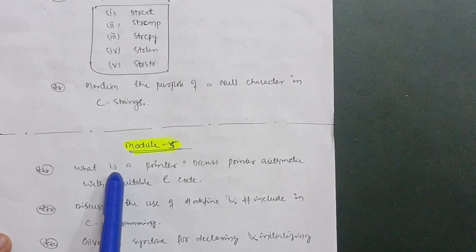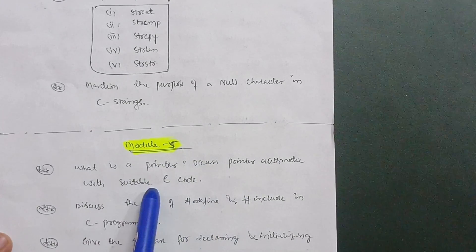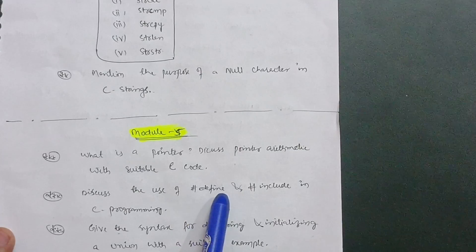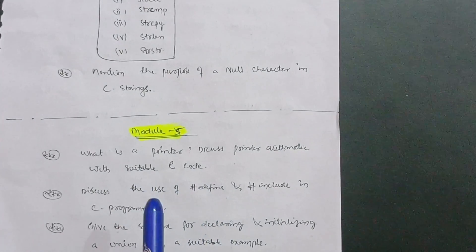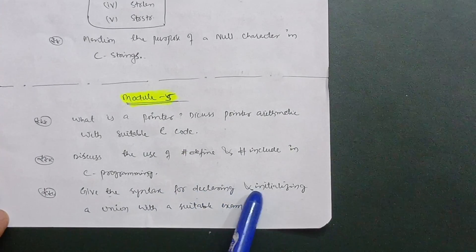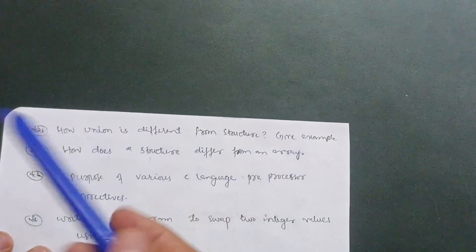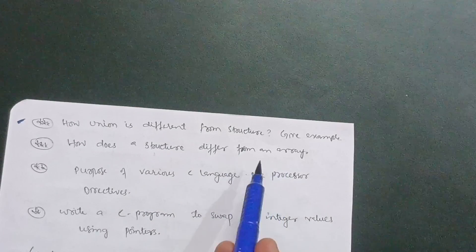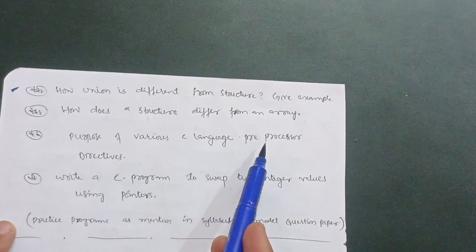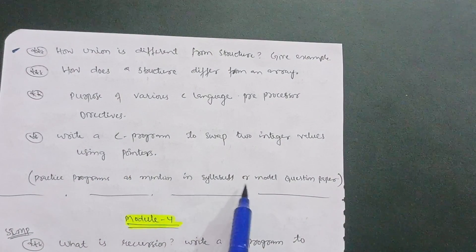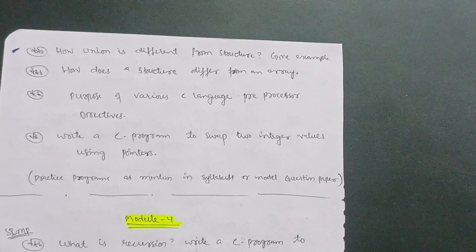Module five is a little easier. Focus on: what is a pointer — discuss pointer arithmetic with a suitable C code example. Next, discuss the use of #define and #include in C programming, as these are commonly used at the beginning of every C program. Also cover: the syntax for declaring and initializing a union with a suitable example. A super important question is how union is different from structure — give an example. How does a structure differ from an array is also important. Finally, cover the purpose of various C preprocessor directives and write a C program to swap two integer values using pointers.